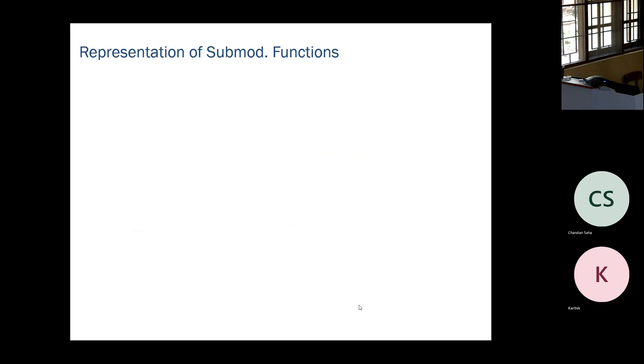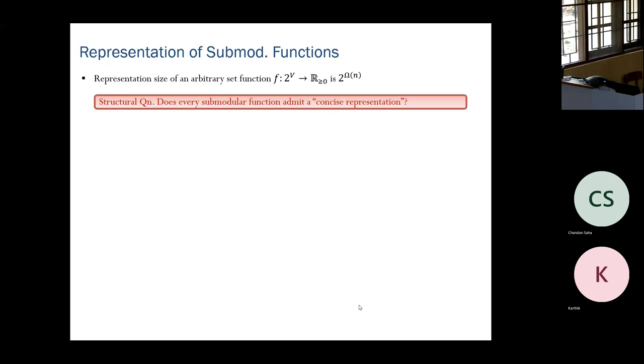We are interested in representing submodular functions. By a representation, I mean a way to write out the function so that we can recover the function value of every subset. Note that the representation size of an arbitrary set function is typically exponential — even zero-one valued functions require exponential size to represent. But submodularity brings a lot more structure, so the natural question is whether submodular functions admit a concise representation.